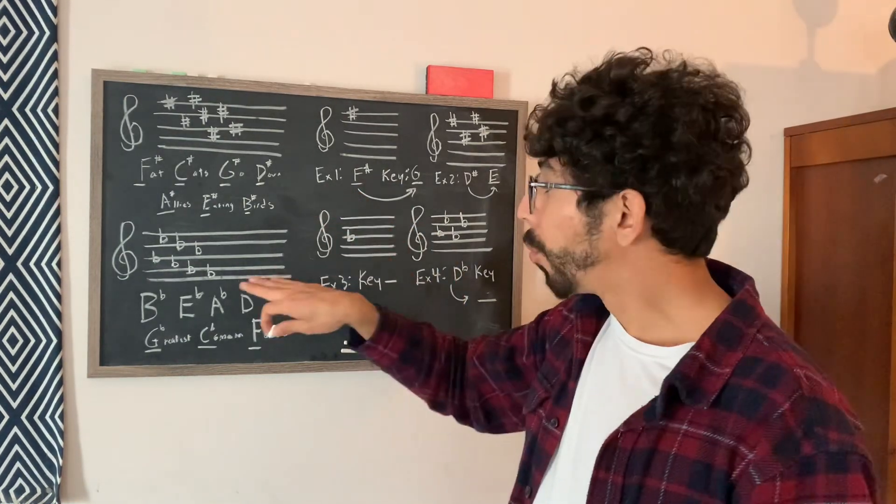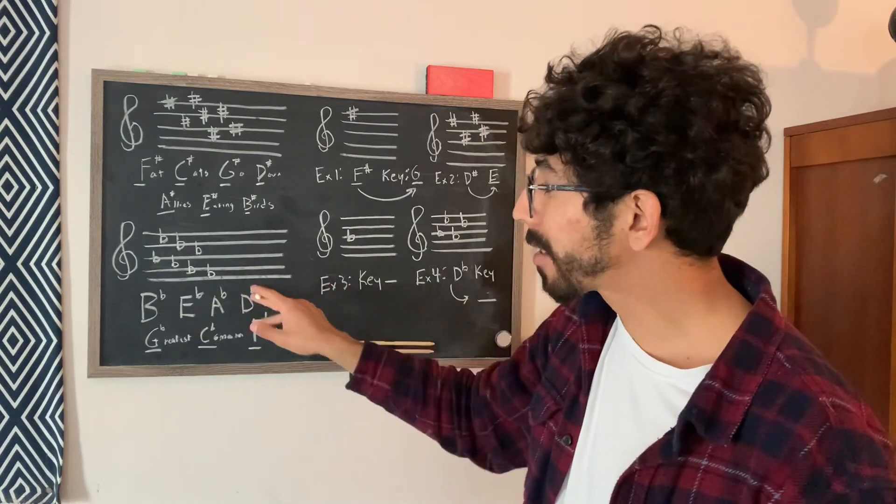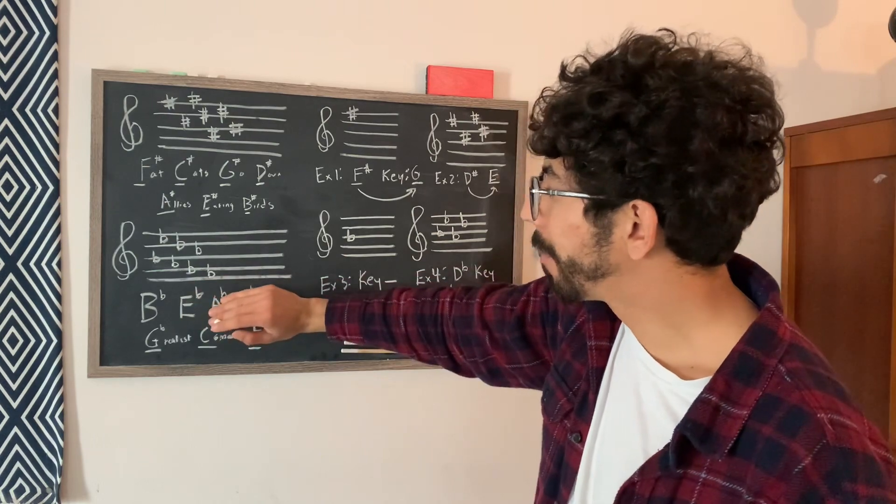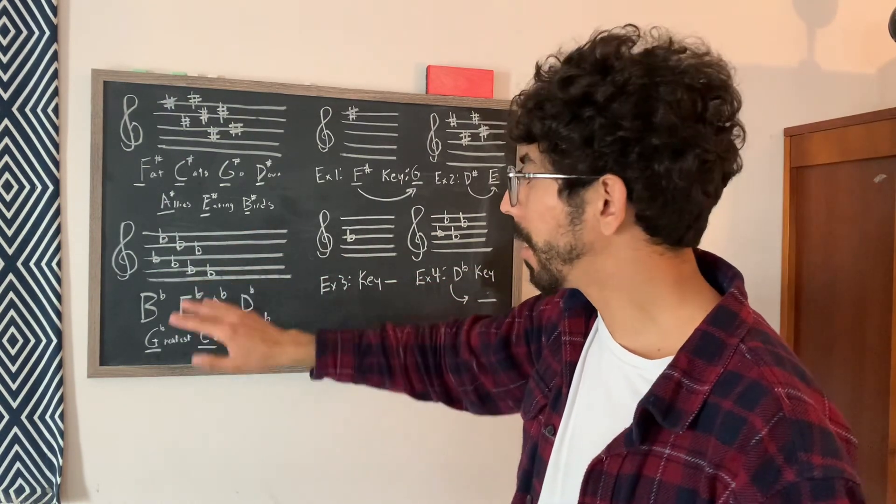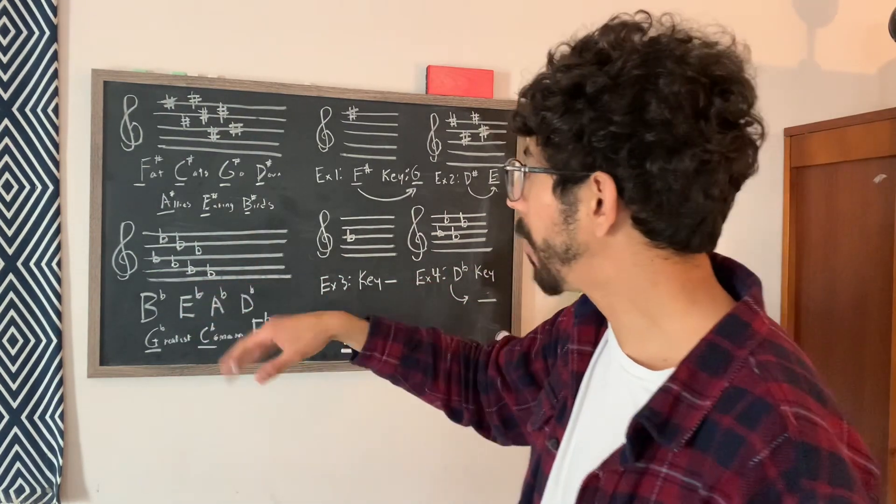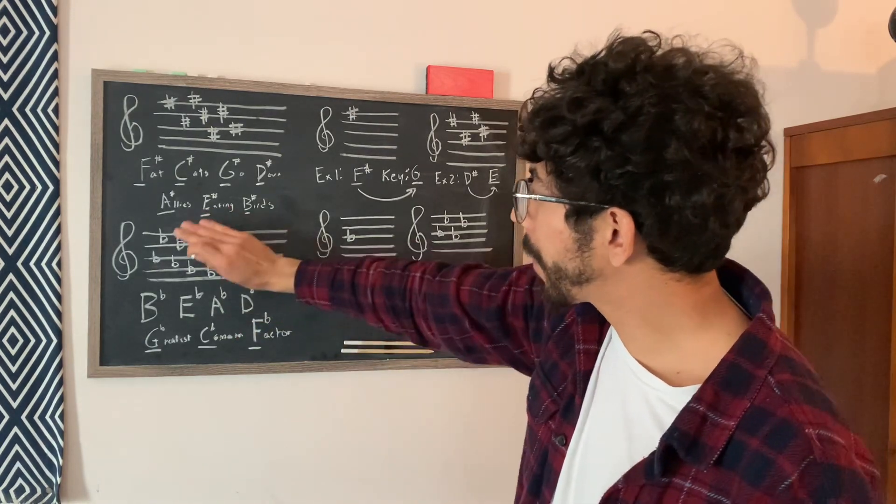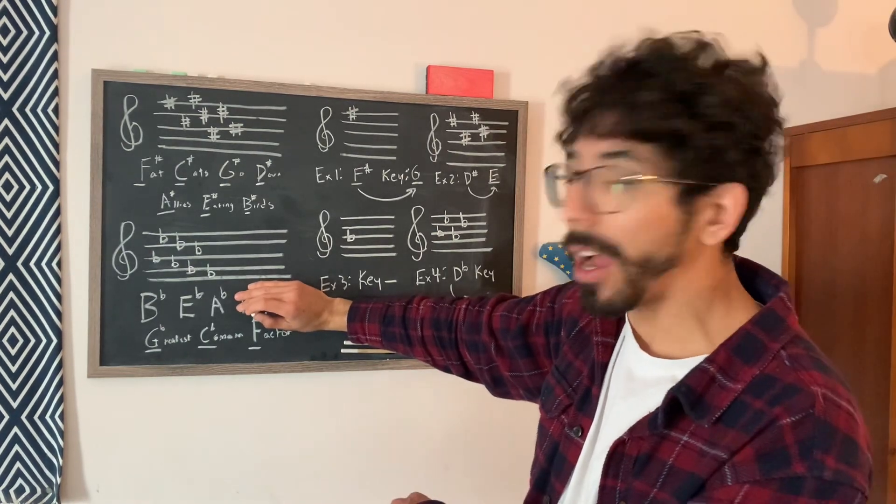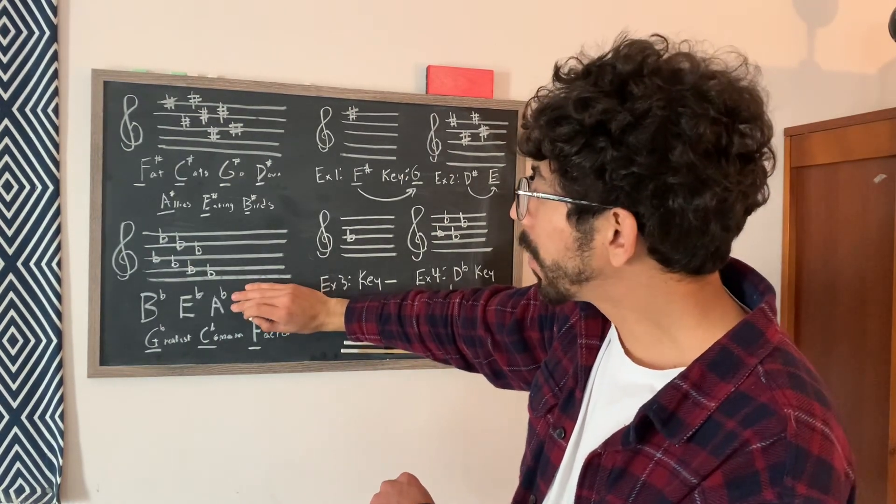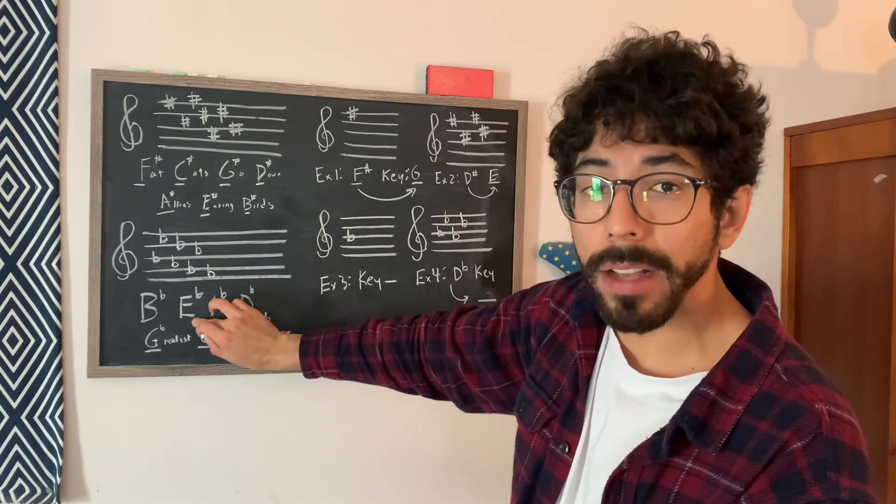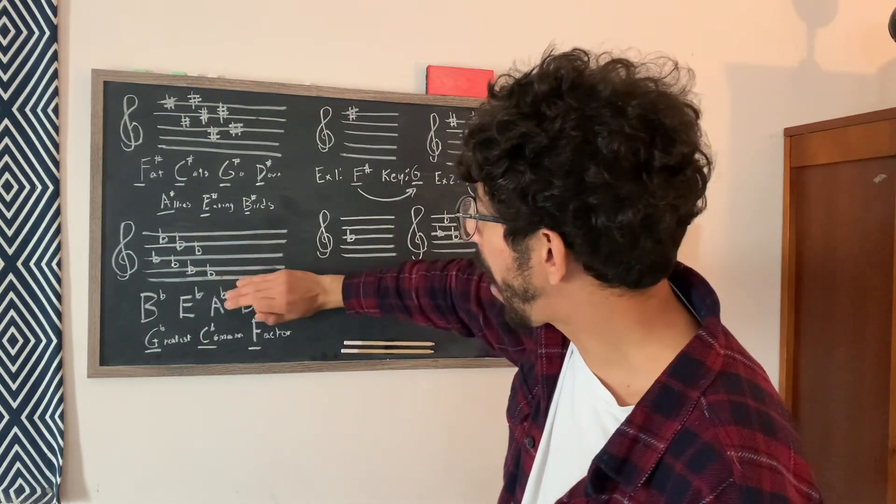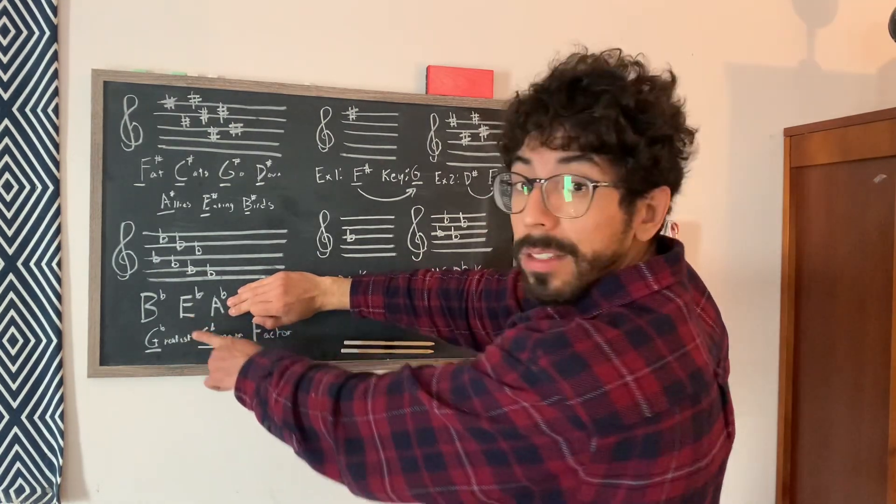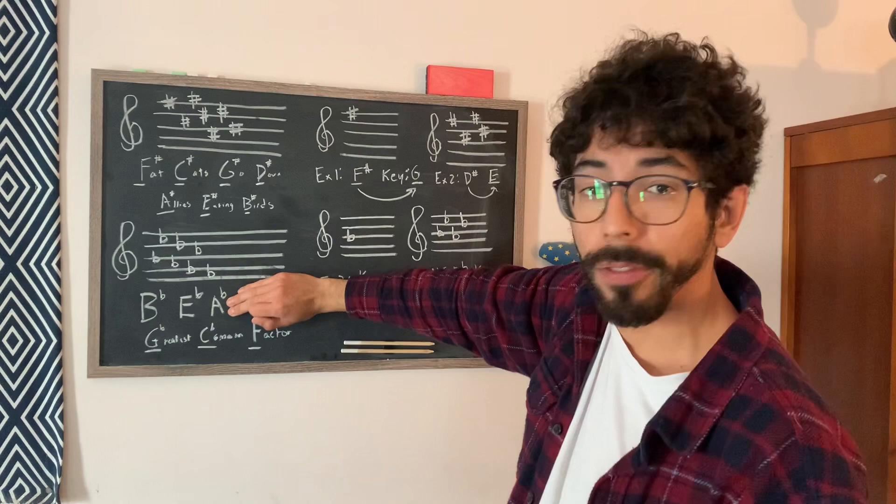So with the rule with flats, instead of counting the next letter over, say we have three flats, right? So we end on A flat, instead of going to the next letter after that, which would be B, we simply just go to the second to last flat, which would be E flat. So if there's three flats, we'd go to the second to last flat, and that's the key signature we're in. We'd be in E flat major.